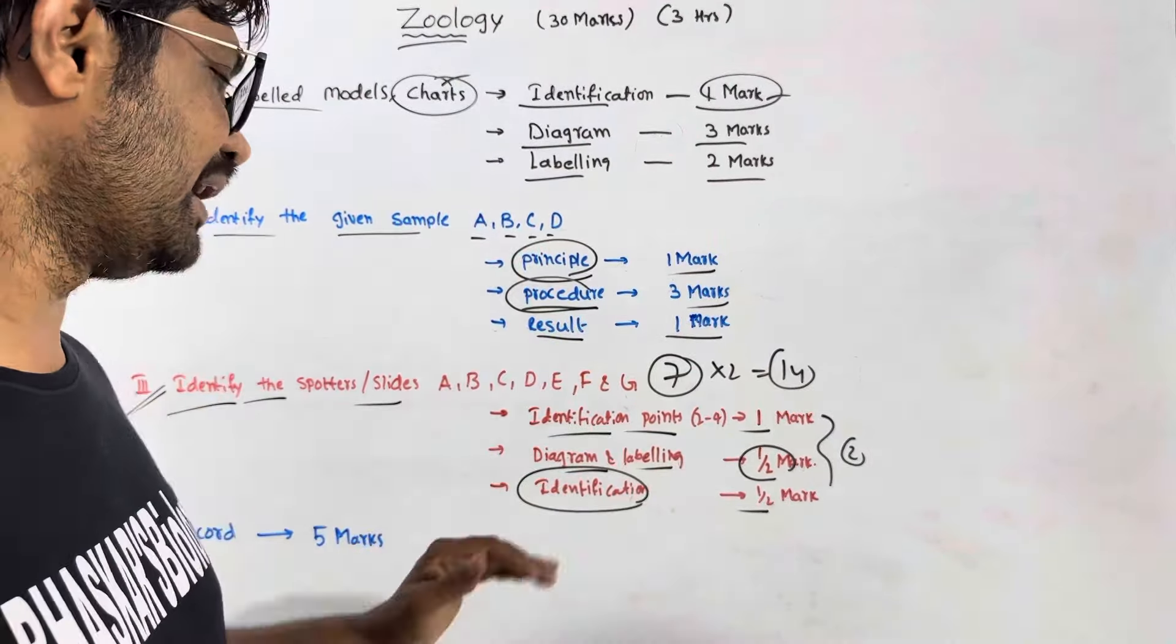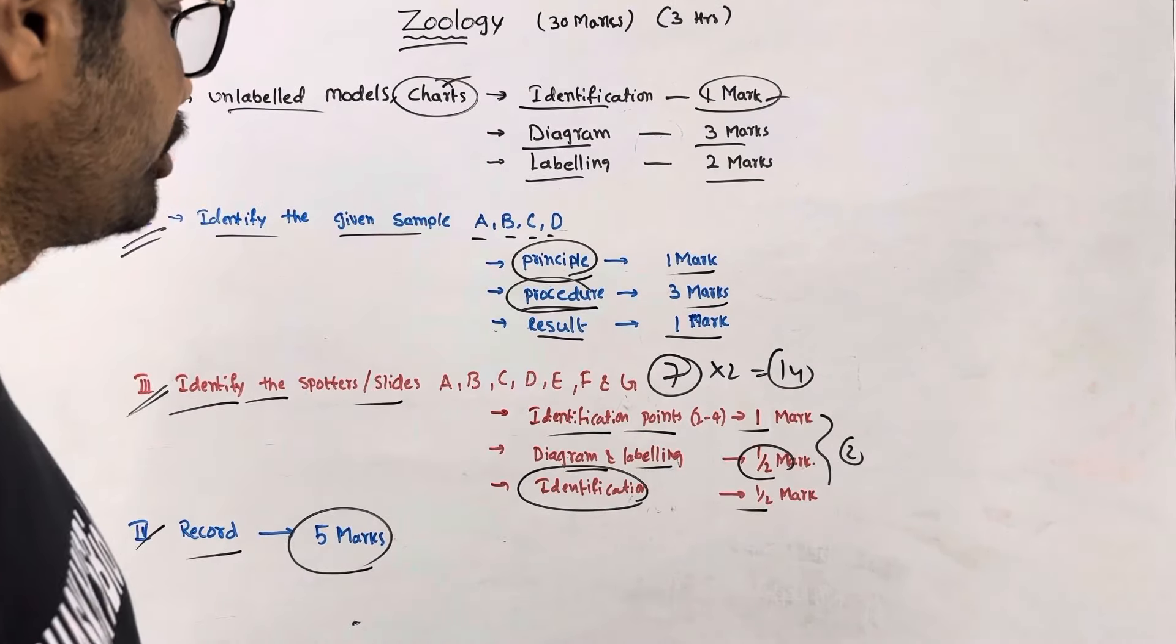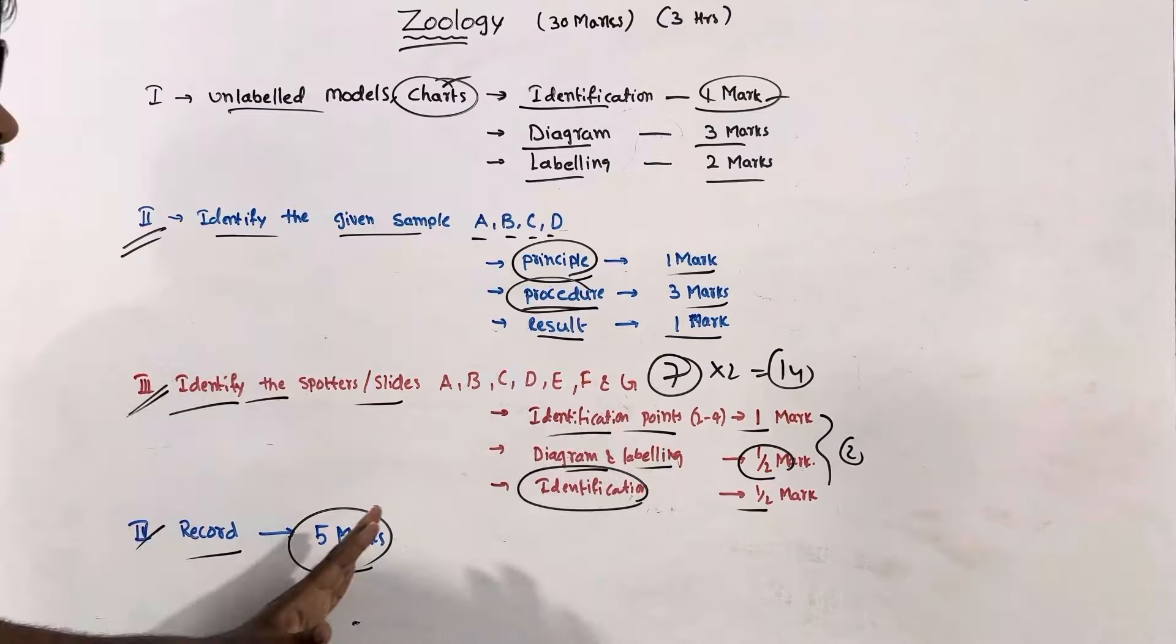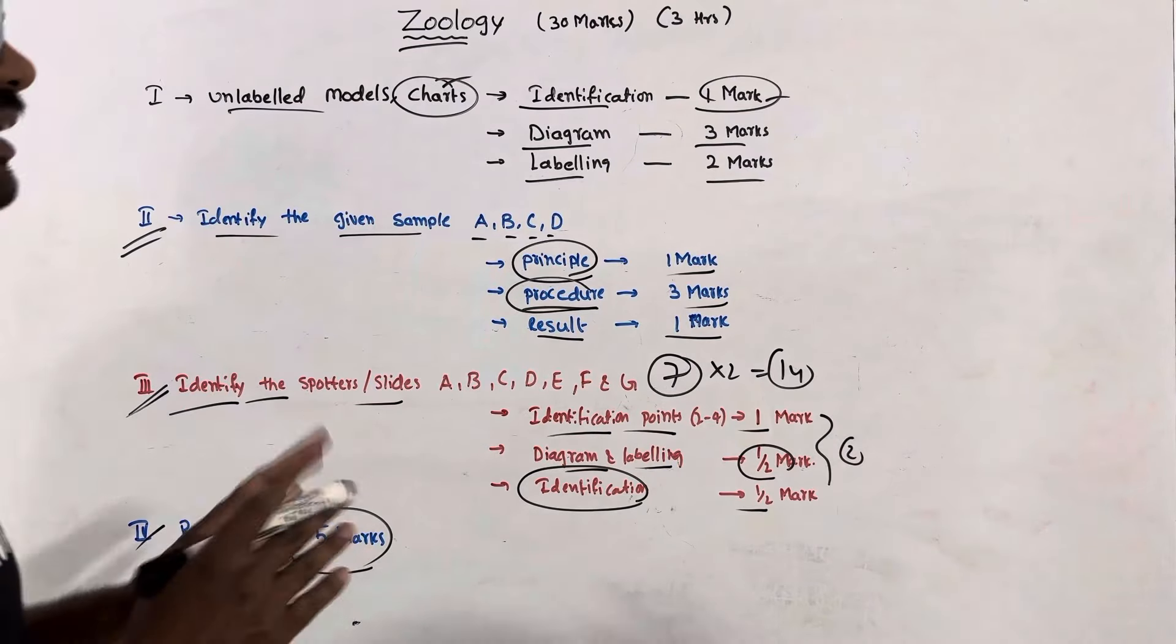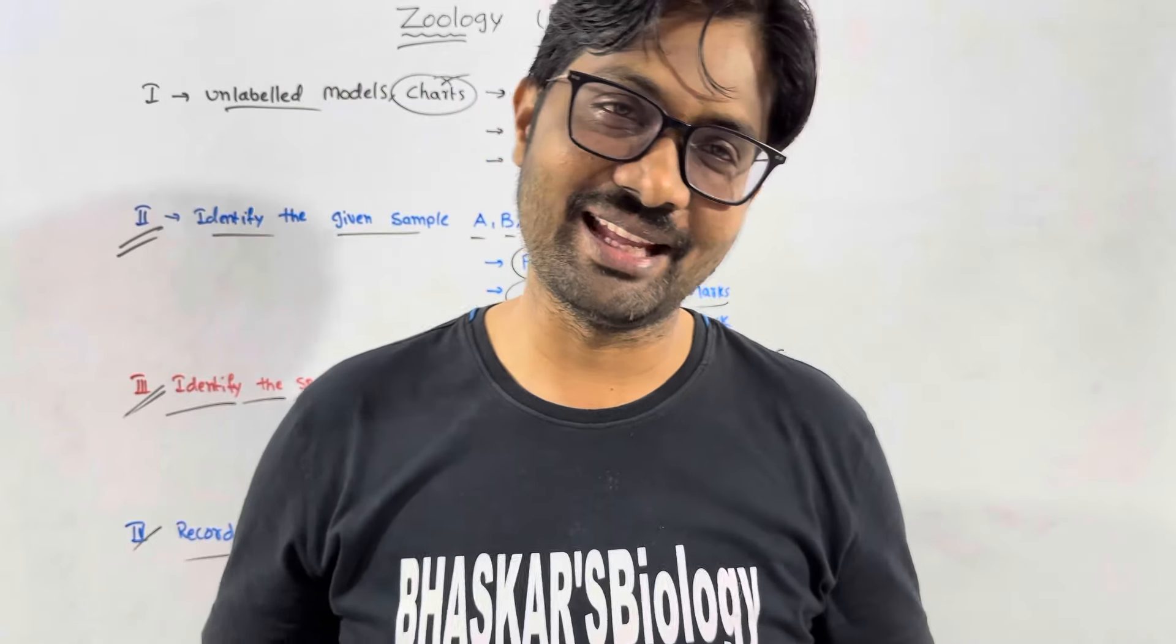In the last Roman numeral 4, there is the record. The record is 5 marks. This is the practical exam overview. If you have an idea now, please like and subscribe. Thanks for watching. Thank you very much.